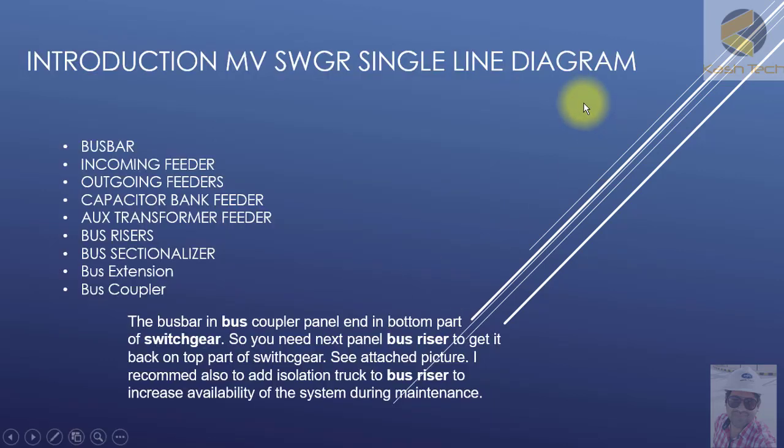Then I will open a single line diagram and discuss some components of it. There are terminologies related to MV switchgear such as busbar, incoming feeder, outgoing feeders, capacitor bank feeders, auxiliary transformer feeders, bus risers, bus sectionalizer, bus extension, and bus coupler. I will be explaining these terminologies in detail.